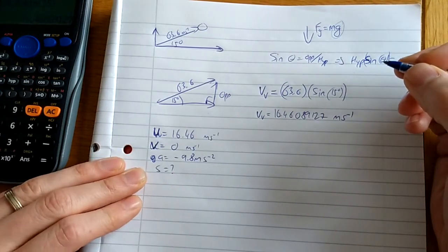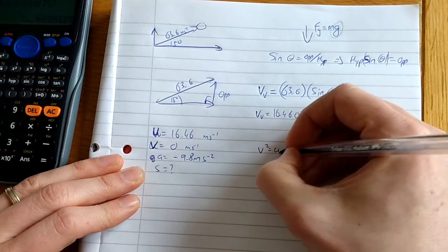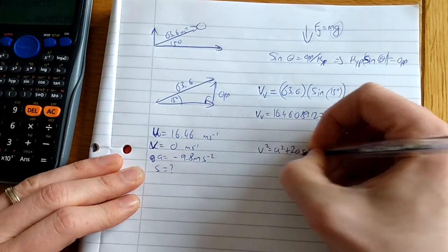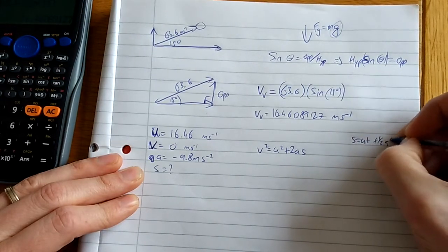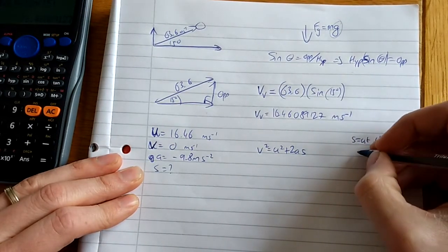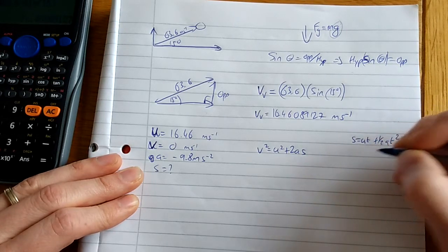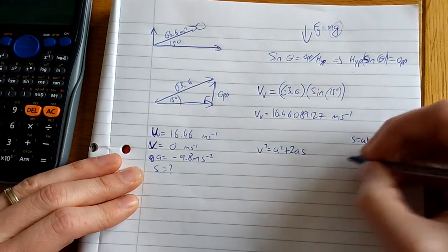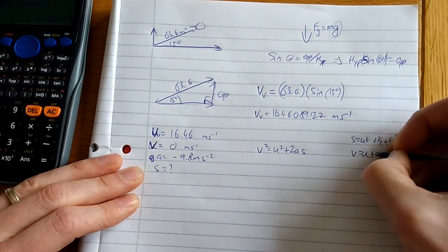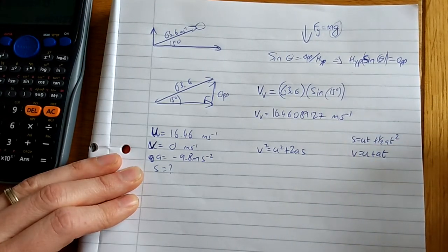Which equation works for me here? v² = u² + 2as. The other ones are s = ut + ½at², and v = u + at.